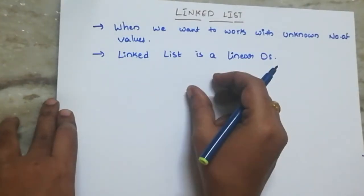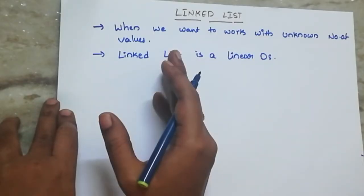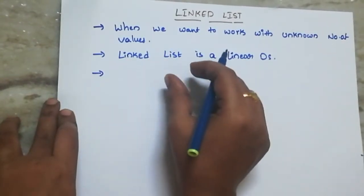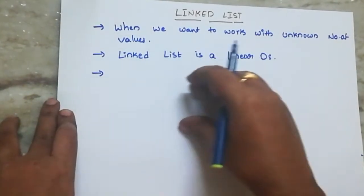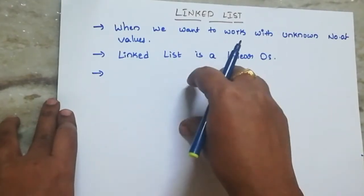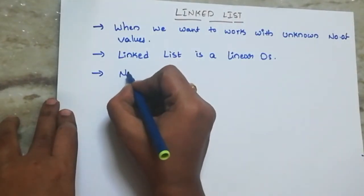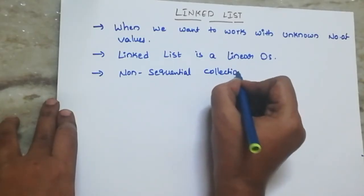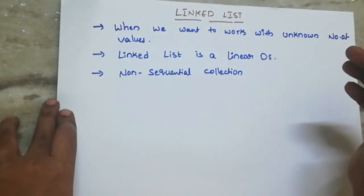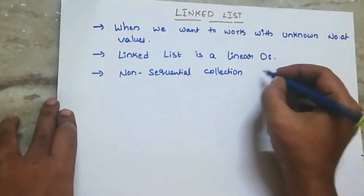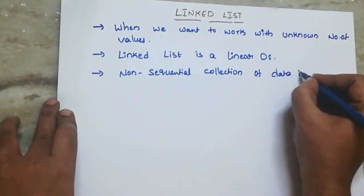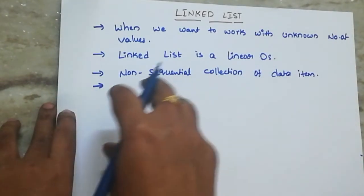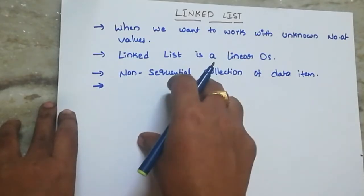This linear data structure means we are going to talk about continuous and non-continuous memory allocation. Linked list uses non-sequential collection of data items — we work with non-continuous memory allocation. In data structures, arrays use continuous memory allocation, and linked list uses non-continuous memory allocation.